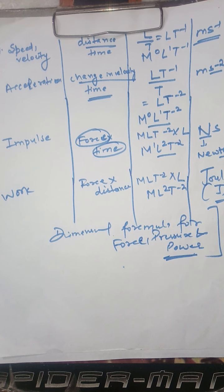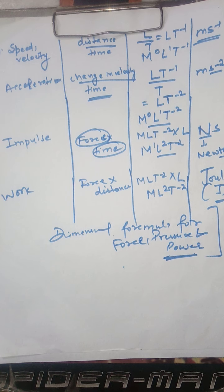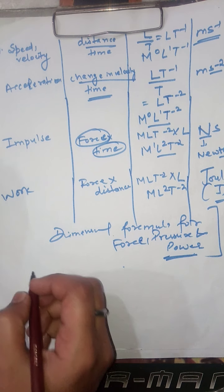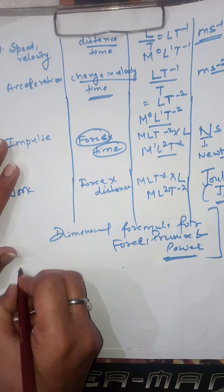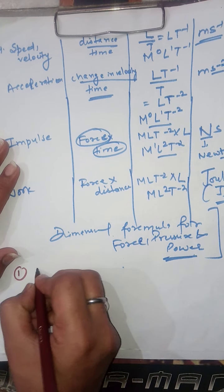Hello students. Now we are going to start with some important questions so that after one video we can start with the second unit. The first question is: can there exist a physical quantity which has no unit and no dimension?